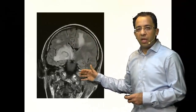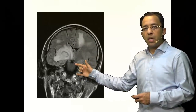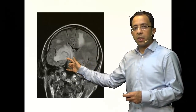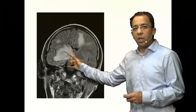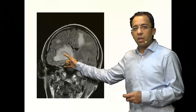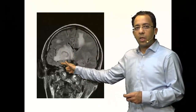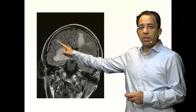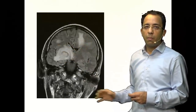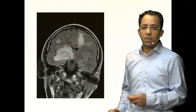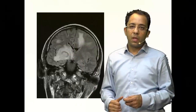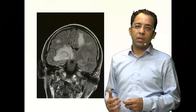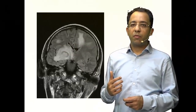In the FLAIR image you can delineate the same ring lesion with surrounding edema in the basal ganglia area. At the gray-white matter junctions you can see multifocal lesions. At this point, we need to give contrast.